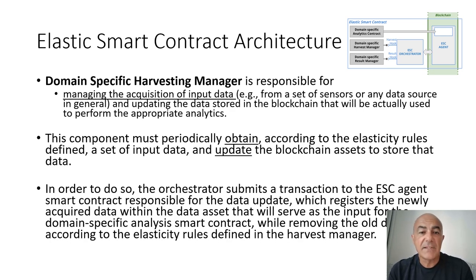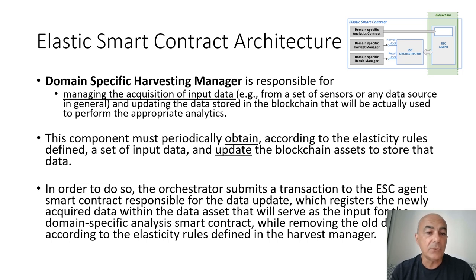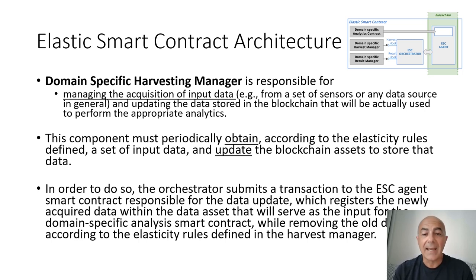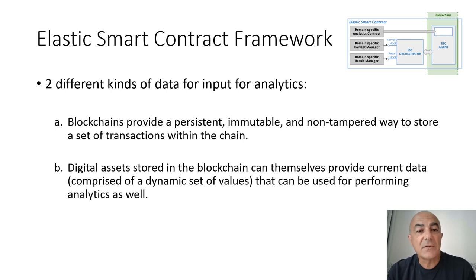The Elastic Smart Contract agent is deployed in the blockchain network and contains a set of generic smart contracts responsible for monitoring the elasticity properties and evaluating the performance of the domain-specific analytic smart contract that the client provides. The domain-specific harvesting manager manages the acquisition of input data — for example from the set of deployed sensors or any data source — and updates the data stored in the blockchain used to perform the analytics. This component periodically obtains, according to the elasticity rules, a set of input data and updates the blockchain assets. The orchestrator submits a transaction to the Elastic Smart Contract agent responsible for the data update, which registers newly acquired data within the data asset while removing old data according to the elasticity rules defined in the Harvest Manager.